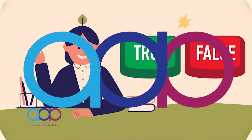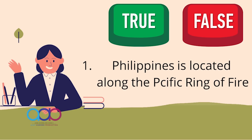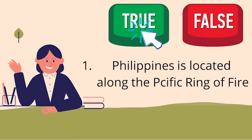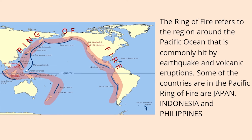I will be flashing statements on your screen and you will determine whether they are true or false. Here's your number one question: the Philippines is located along the Pacific Ring of Fire. True or false? Excellent! The Ring of Fire refers to the region around the Pacific Ocean that is commonly hit by earthquakes and volcanic eruptions. Some of the countries in the Pacific Ring of Fire are Japan, Indonesia, and the Philippines.